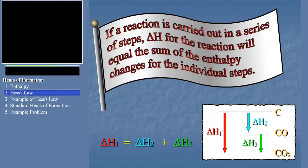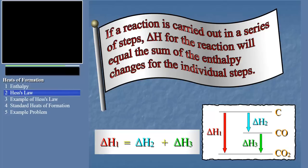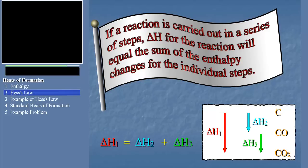In our carbon combustion example, we can express this idea mathematically this way. Delta H1 equals delta H2 plus delta H3. So, the quantity of heat generated by the combustion of carbon to form carbon dioxide is independent of whether the reaction takes place in one step or two.